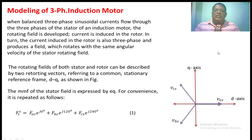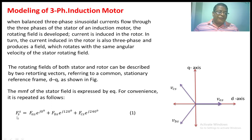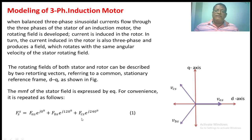The stator has three windings — A phase, B phase, and C phase. Each phase produces a sinusoidal flux, and the sum of the three fluxes is a resultant rotating vector. We can represent the stator MMF as: F_S^S = FAS·e^(jθ) + FBS·e^(j120°) + FCS·e^(j240°). Here FAS, FBS, and FCS are the stator MMFs from A, B, and C phases respectively, displaced by 120 and 240 degrees because the MMFs are displaced by 120 degrees in space.